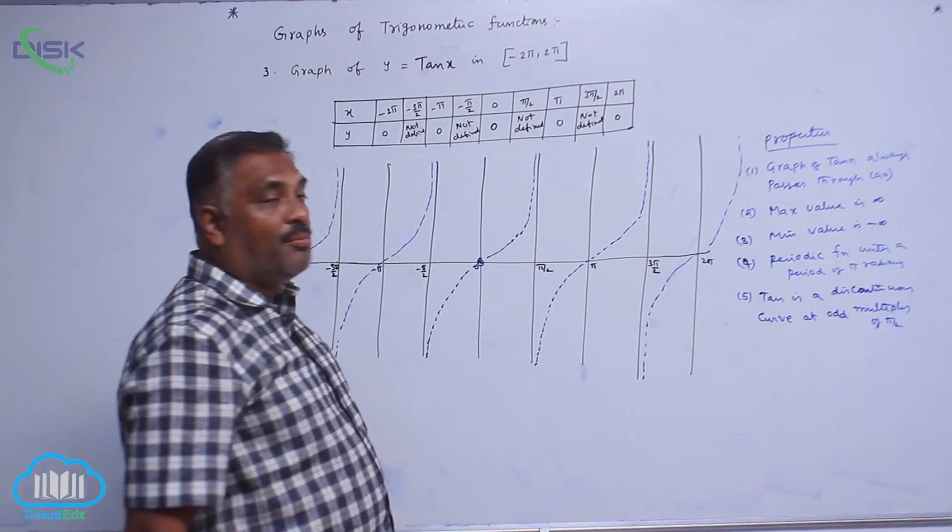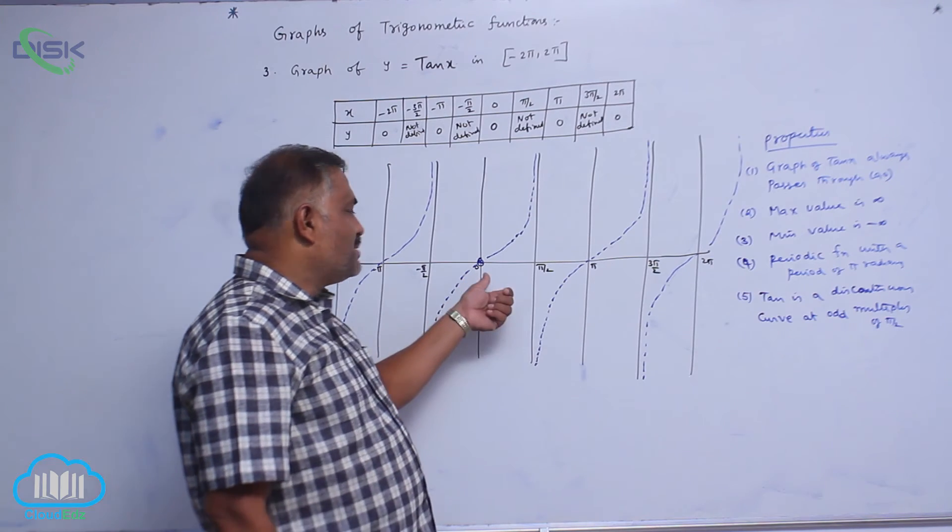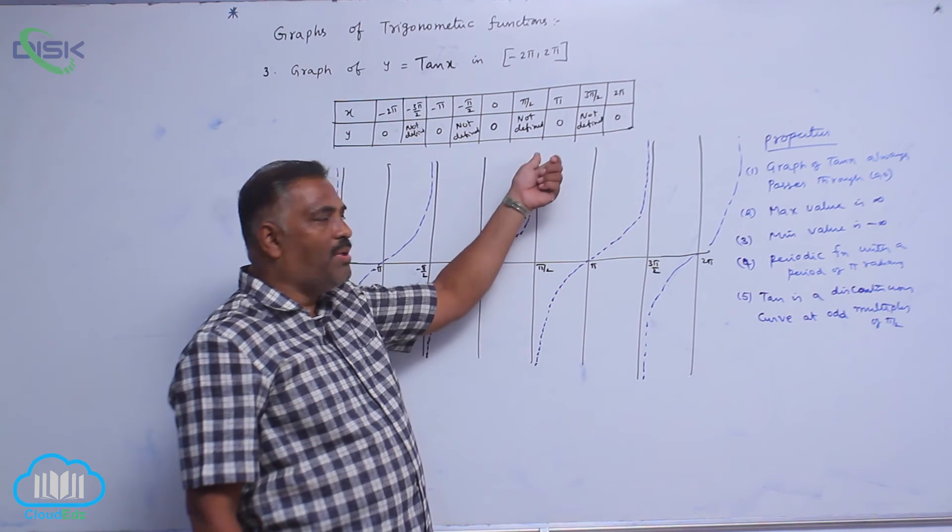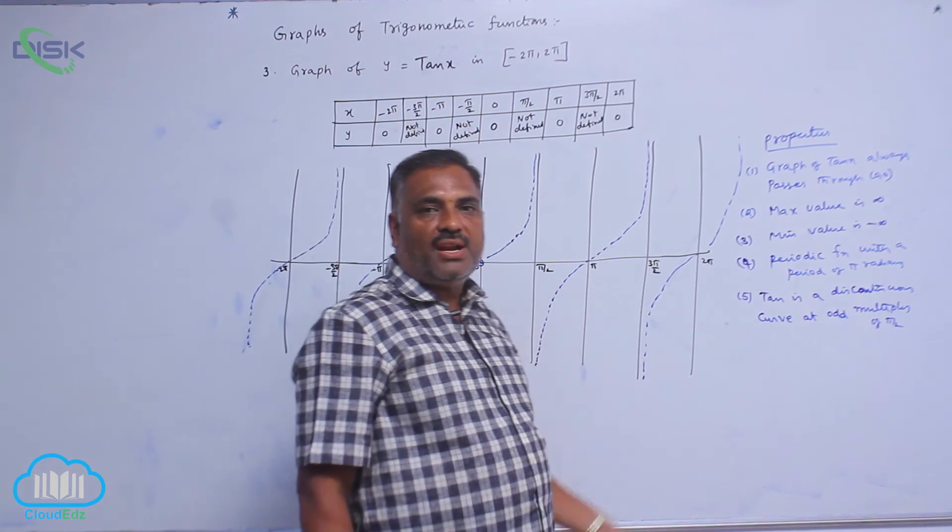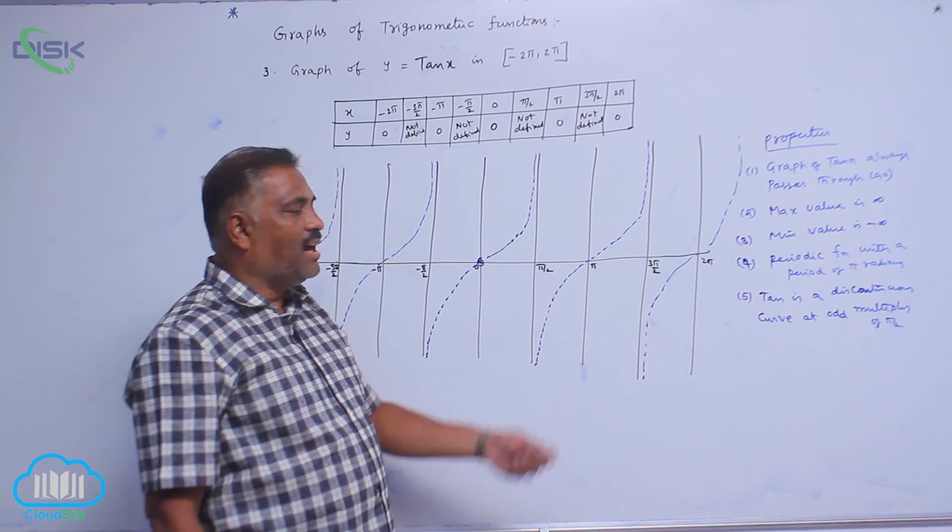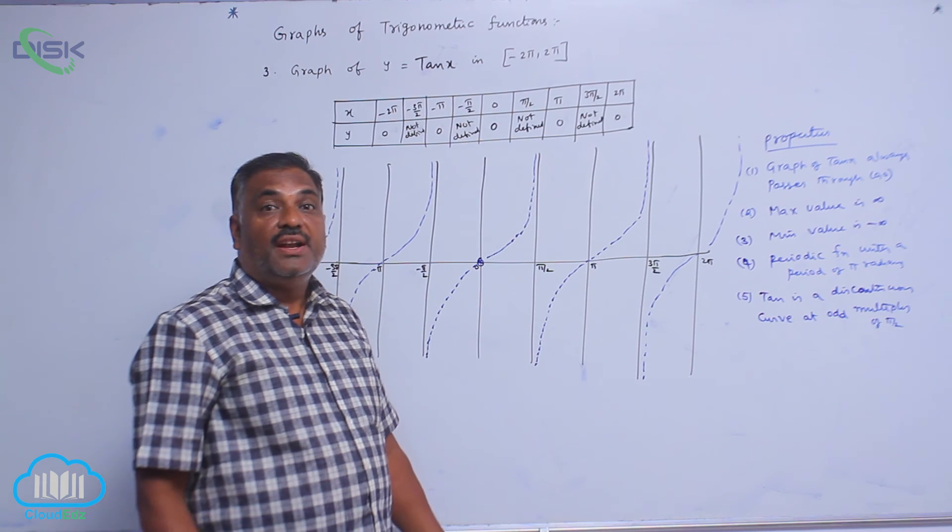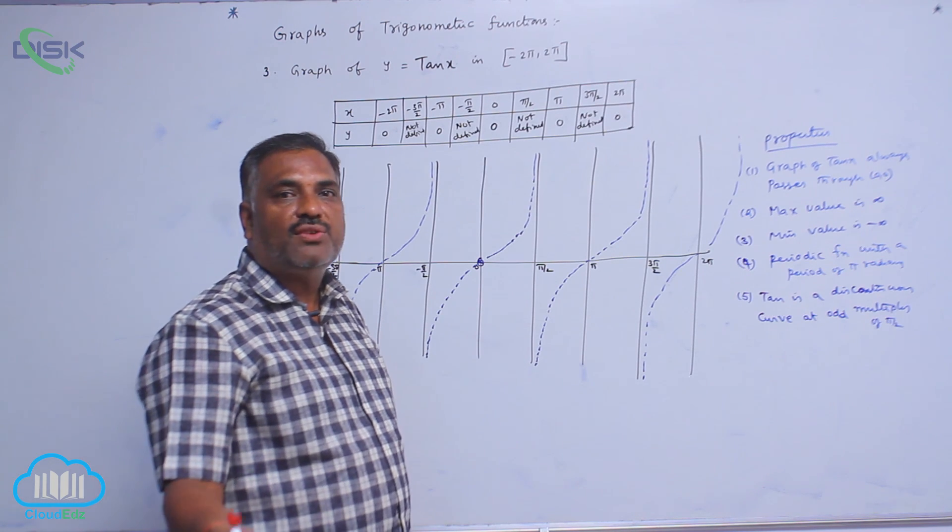So, please be careful, particularly in tan graph. It is passing through the origin, maximum value plus infinity, minimum value minus infinity, periodic function with a period of π radians, and it is a discontinuous function, discontinuous at odd multiples of π by 2.